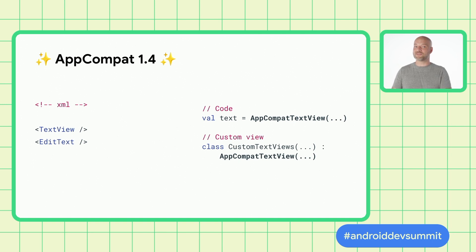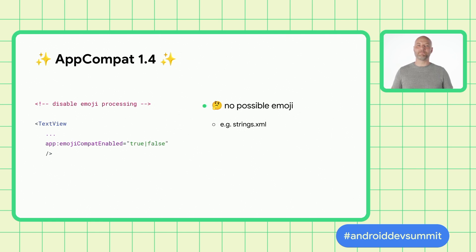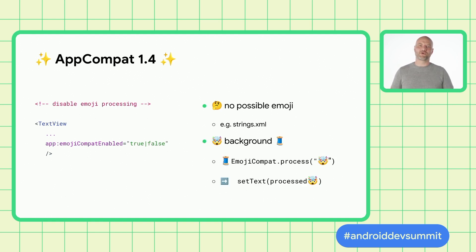Just using TextView or EditText in XML works if your Activity extends AppCompatActivity, which installs a layout inflater that replaces TextView with AppCompatTextView and so on. In code, you should ensure you create an AppCompatTextView whenever you'd create a TextView, and custom views should subclass their appropriate AppCompat subclass. The EmojiCompat enabled attribute is useful to avoid emoji processing in situations where you know text may never contain emoji. It's also useful if you want to process emoji on a background thread — you can disable AppCompat's integration and move emoji processing to a background thread. If you're displaying a lot of text in a RecyclerView and getting a little bit of jank, this is an optimization to consider.